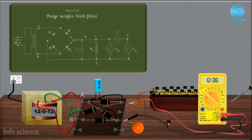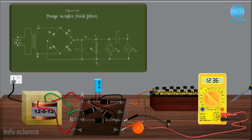We determine the VAC and VDC. To measure VDC, use the multimeter on DC voltage setting. We change the knob to the 20V measurement range. We measure VDC, then we measure VAC. We measure the ripple of the bridge rectifier with filter.